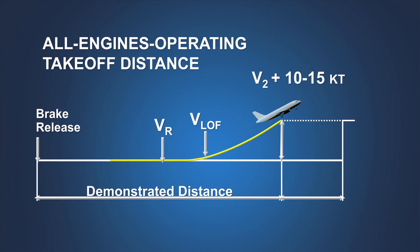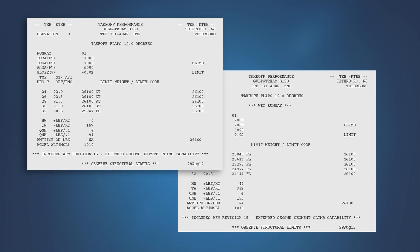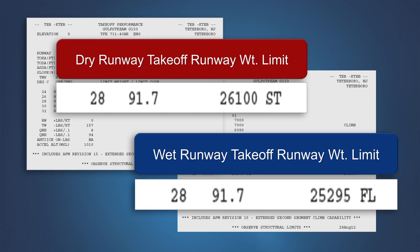Note that the all engines operating takeoff distance for a wet runway remains unchanged from that for a dry runway. The all engines operating takeoff distance screen height for a wet runway remains at 35 feet and still must include the 15 percent margin. In most cases, the maximum allowable takeoff weight on a wet runway will remain less than the allowable weight on a dry runway, even though the wet runway case includes credit for available reverse thrust and reduced screen height.